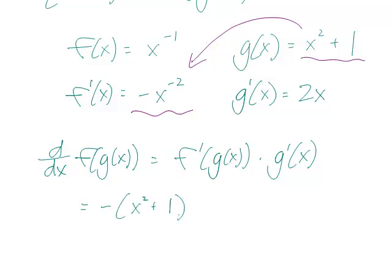to the minus 2, times g prime of x would be 2x. We have that, that's a little more obvious than f prime of g.